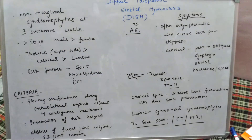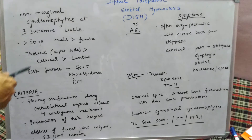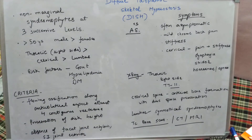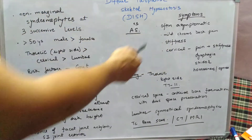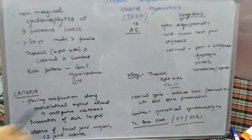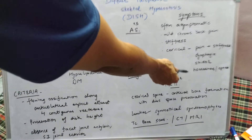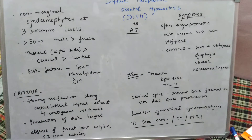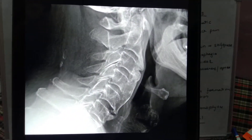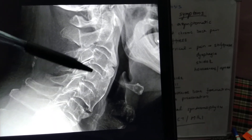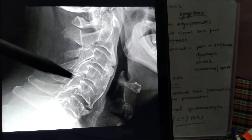In terms of symptoms, DISH is often asymptomatic and diagnosed incidentally. Since the thoracic spine is most commonly involved, a patient may complain of chronic mild back pain with morning stiffness, similar to Ankylosing Spondylitis. If the cervical spine is involved, compressive features may arise: pain, stiffness, dysphagia, stridor, hoarseness, or sleep apnea. As seen in the figure, flowing osteophytes with a dripping candle wax appearance on the anterolateral aspect can cause these compressive features.